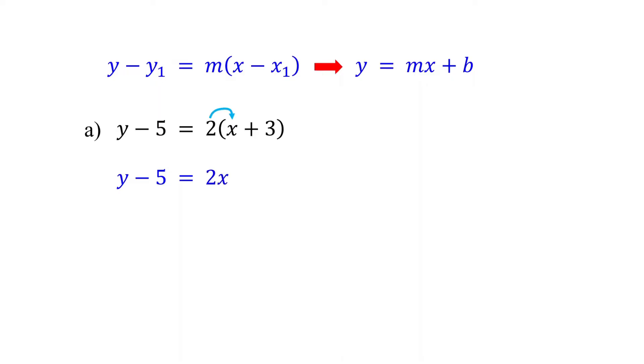2 times X is 2X, and 2 times 3 gives us 6. Remember, in slope intercept form, Y should be by itself. So, our next step is to isolate Y. To do this, add 5 to both sides of the equation.